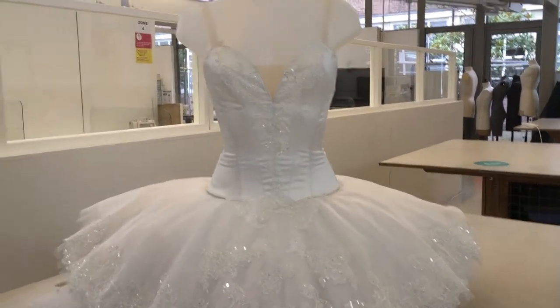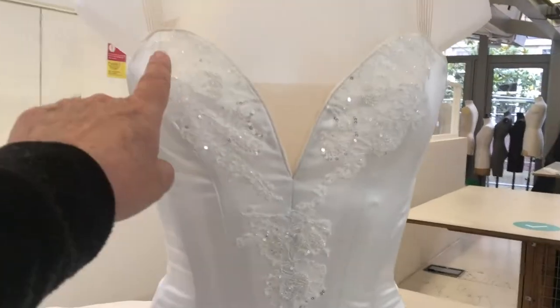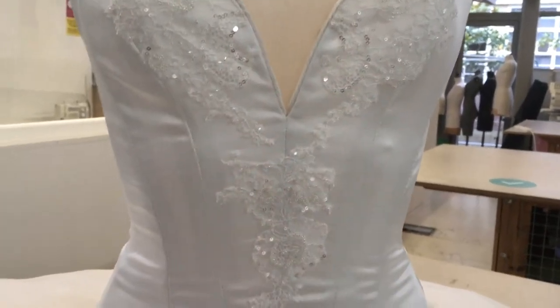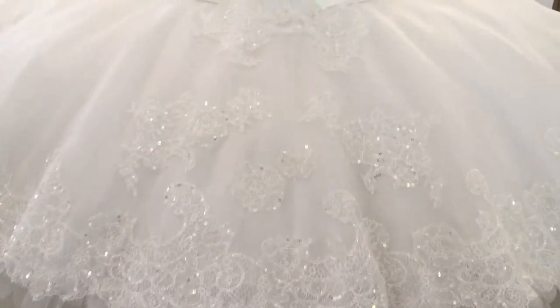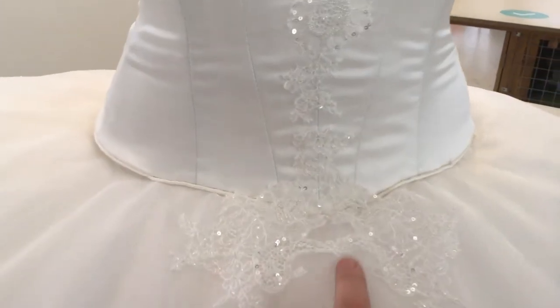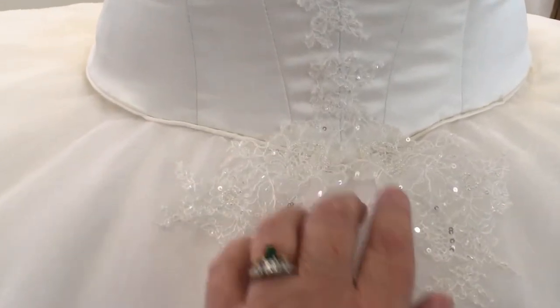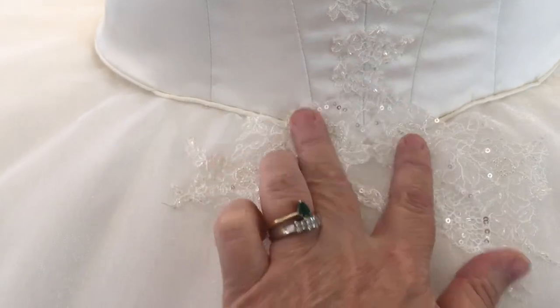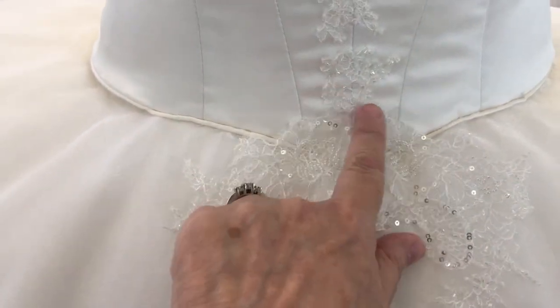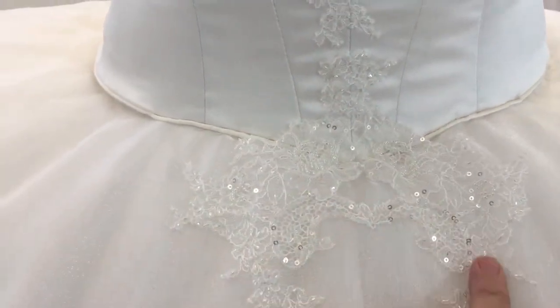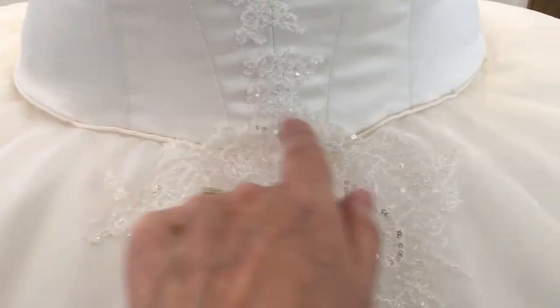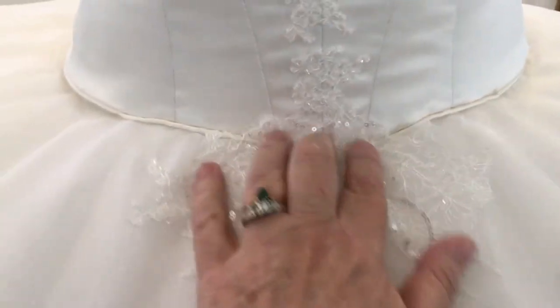So you've decorated your bodice and the top plate and then to pull it all together, this one piece is joined from the bodice onto the plate. This is secured down so it won't move.